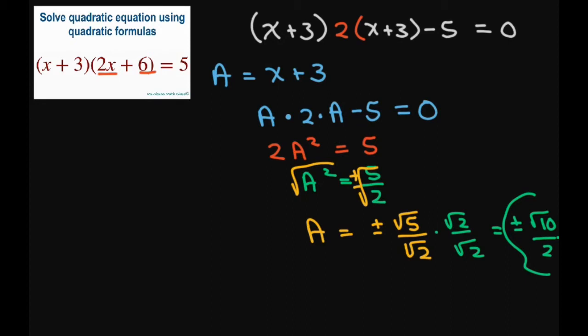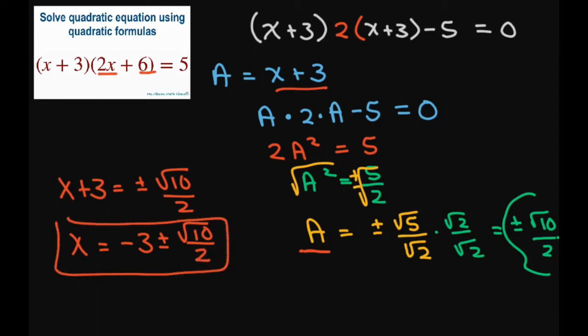Now, we can't leave it like that because we really have to solve for x. So now, substituting back into A right here, we have x plus 3 equals plus or minus square root of 10 divided by 2. And then you subtract your 3, and you get negative 3 plus or minus square root of 10 divided by 2.